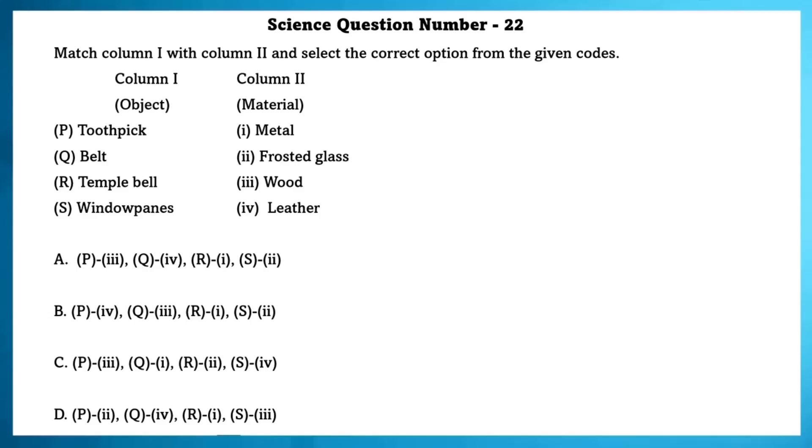Science question number 22. Match column 1 and column 2 and select the correct option from the given codes. Toothpick is made of wood. Belt is made of leather. Temple bell is made out of metal. Window panes are made of frosted glass.